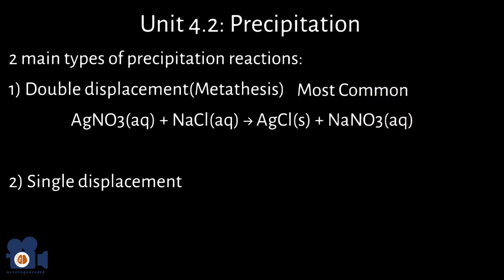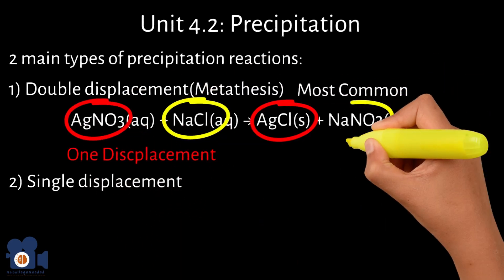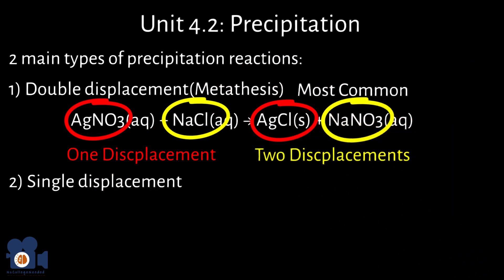From the reaction, you can see Ag swapping to the Cl, one displacement, and the Na swapping to the NO3, two displacements, therefore double displacement.